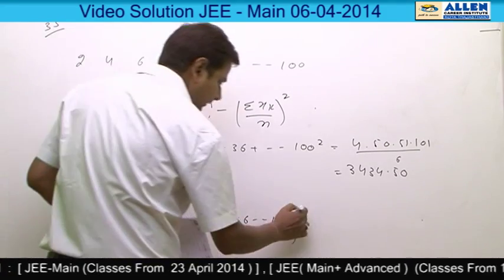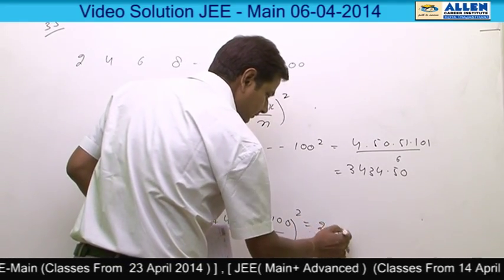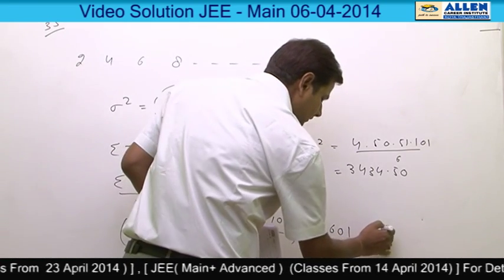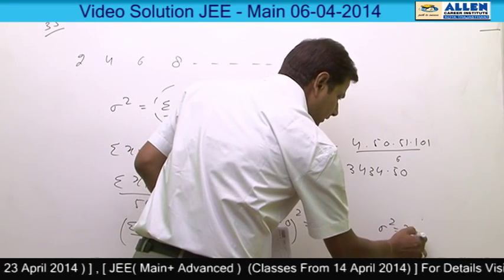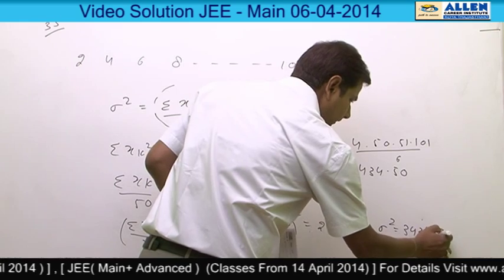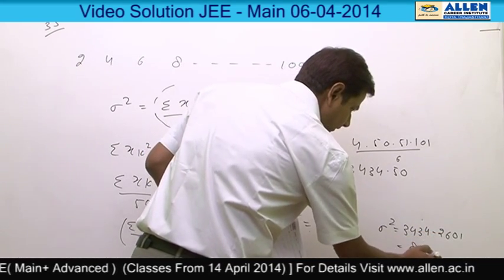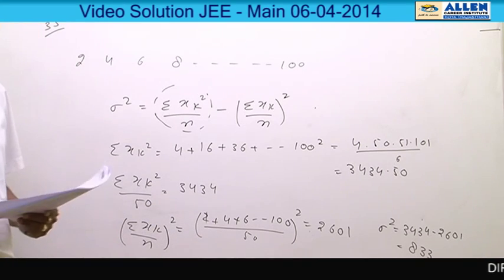Which becomes 2601. So our final answer is variance equals 3434 minus 2601, which is 833. So our correct option is option number 2.